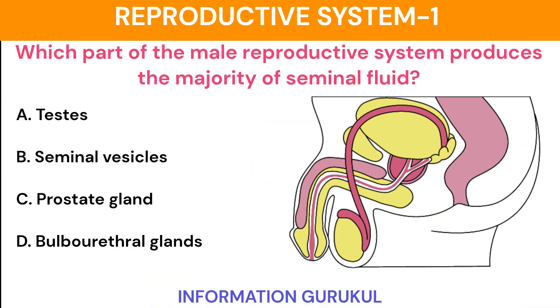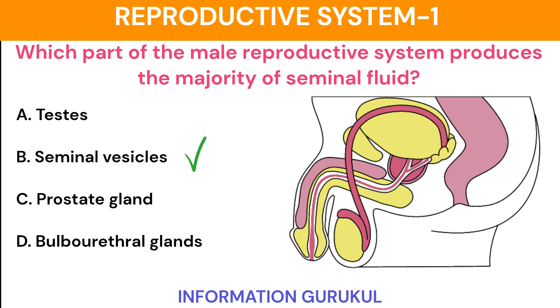Which part of the male reproductive system produces the majority of seminal fluid? Seminal vesicles.